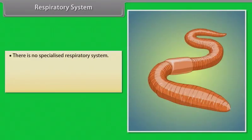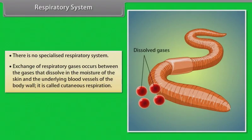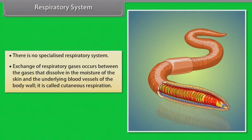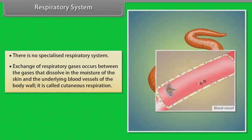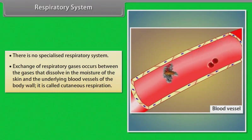There is no specialized respiratory system in earthworms. Exchange of respiratory gases occurs between gases dissolved in the moisture of the skin and the underlying blood vessels of the body wall. This is called cutaneous respiration.